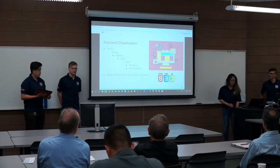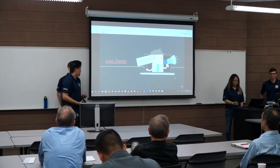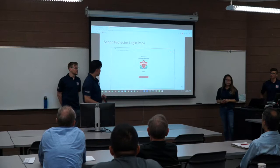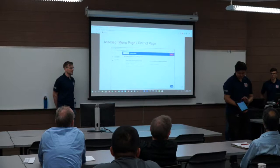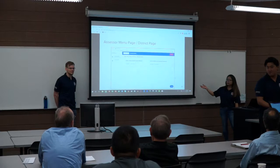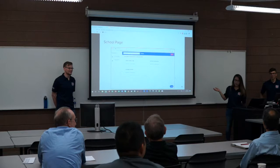Now we're talking about the live demo, and Jacob is walking around showing it on the tablet, which is the intended device for the application. When the user goes to the URL, they first see the login page with our logo, and can sign in with email or a Google account. After that, they're taken to the assessor menu page, which lists all the districts they have access to — for example, Chino Valley. Selecting Chino Valley and clicking View Schools shows all schools within that district.